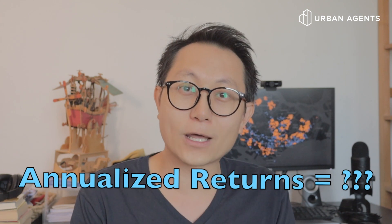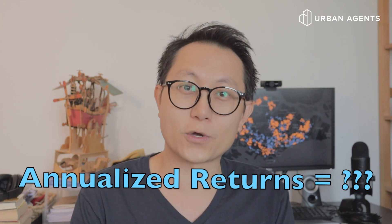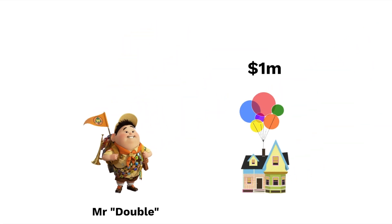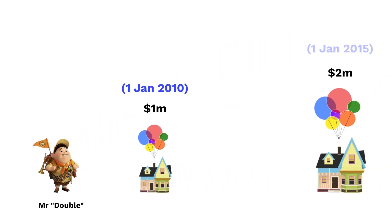Let's start with the basics. What exactly is an annualized investment return? For those of you who are finance or investment guys, feel free to jump ahead a minute or two. For everyone else, I'll explain it with an example. There's this guy named Mr. Double. He bought a home at $1 million on 1st January 2010, and sold that same property five years later at $2 million on 1st January 2015.